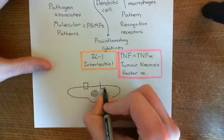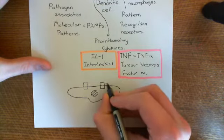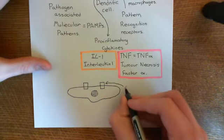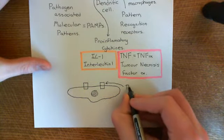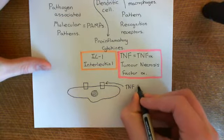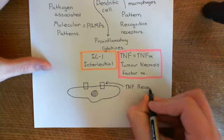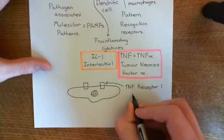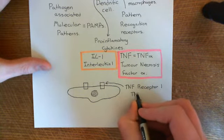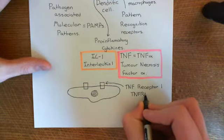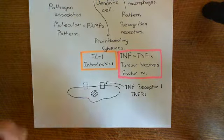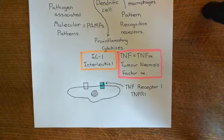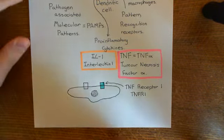The receptor for TNF-alpha is known as TNF receptor 1 — the tumor necrosis factor receptor type 1 — often abbreviated to TNF-R1. We'll color in TNF-R1 in turquoise on the basolateral surface of our endothelial cells.